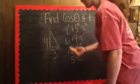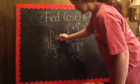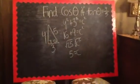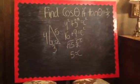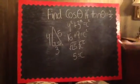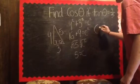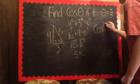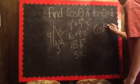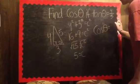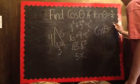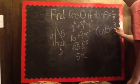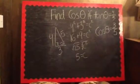Once you've found c, plug it back into the triangle. Then set it equal to the cosine equation, which is adjacent over hypotenuse. And 3 over 5 is your answer.